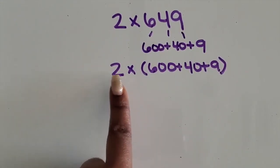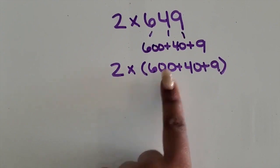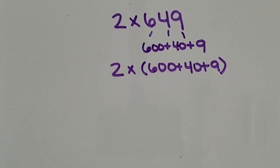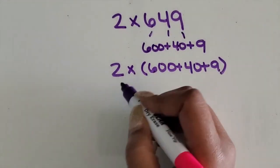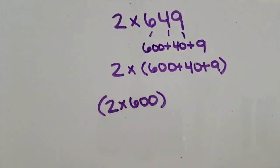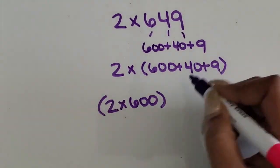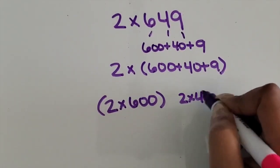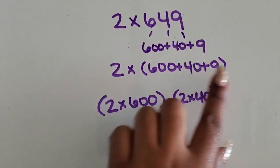Next, we're going to have students multiply that 2 by each value or digit in that three-digit number, so 2 times 600, close that in parentheses, 2 times 40, and 2 times 9.